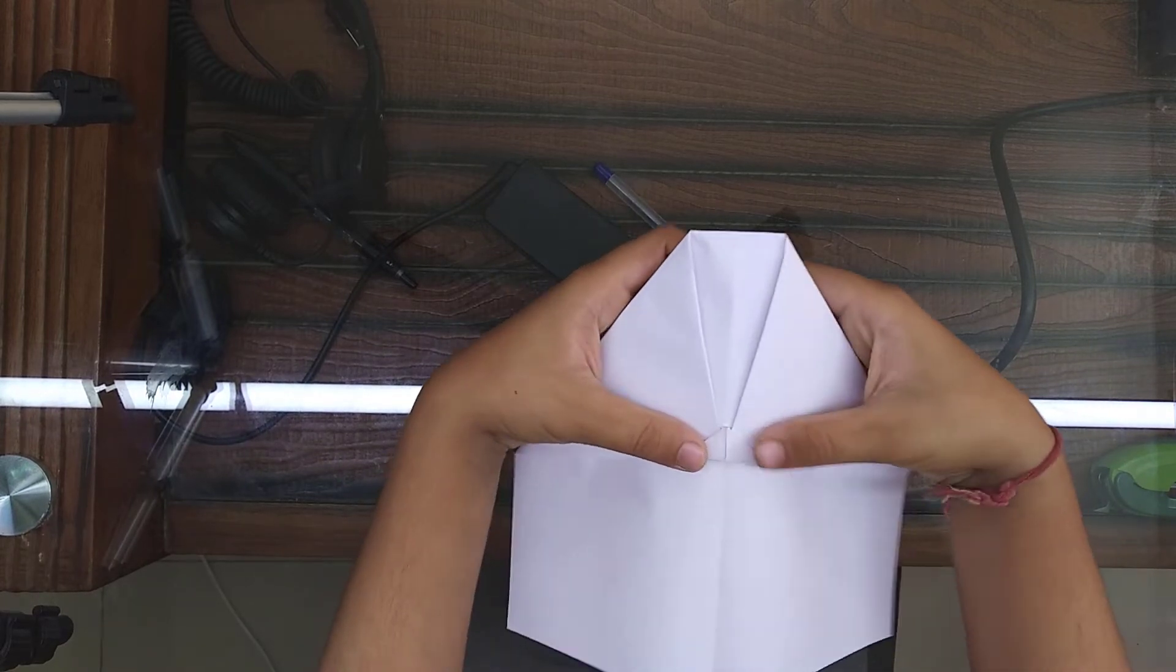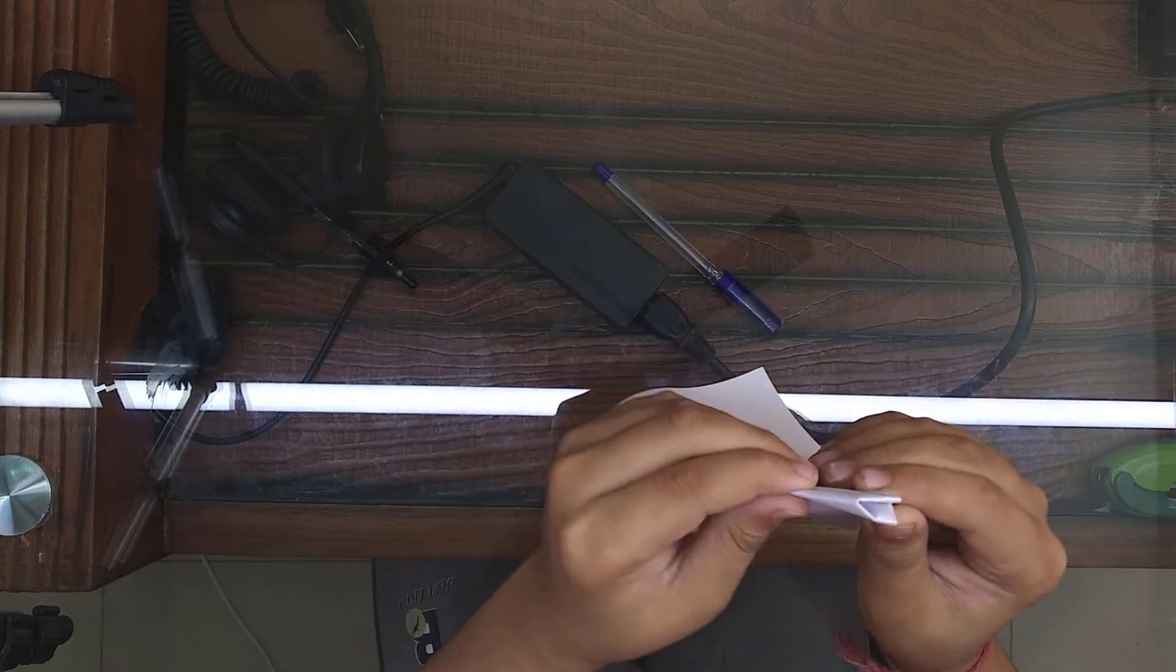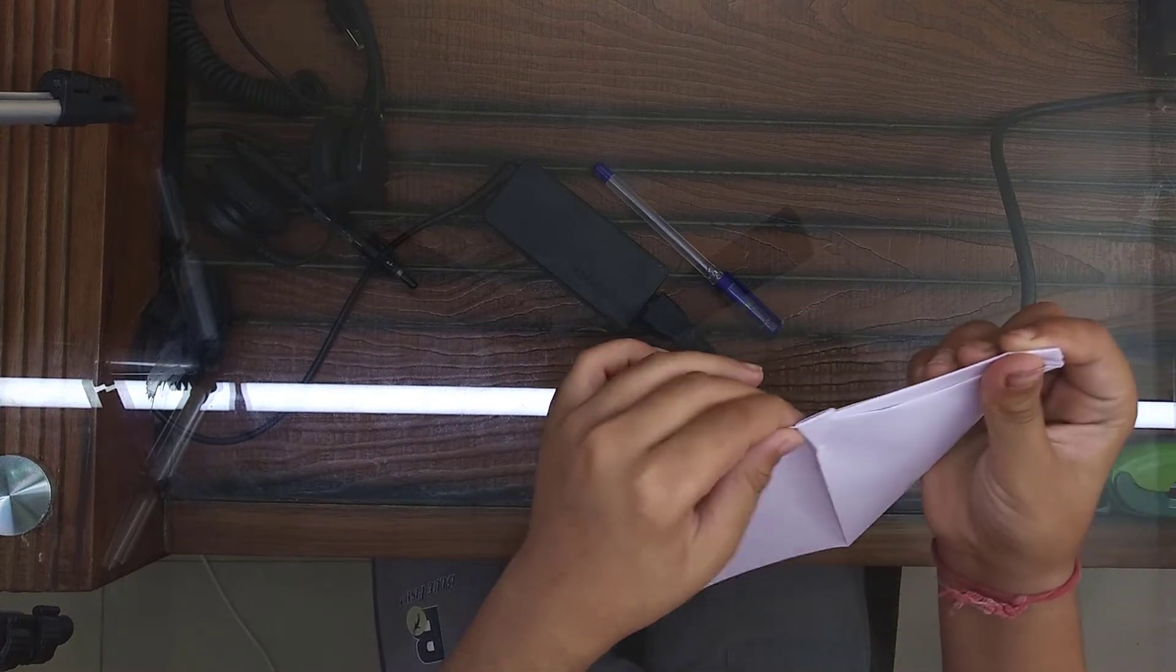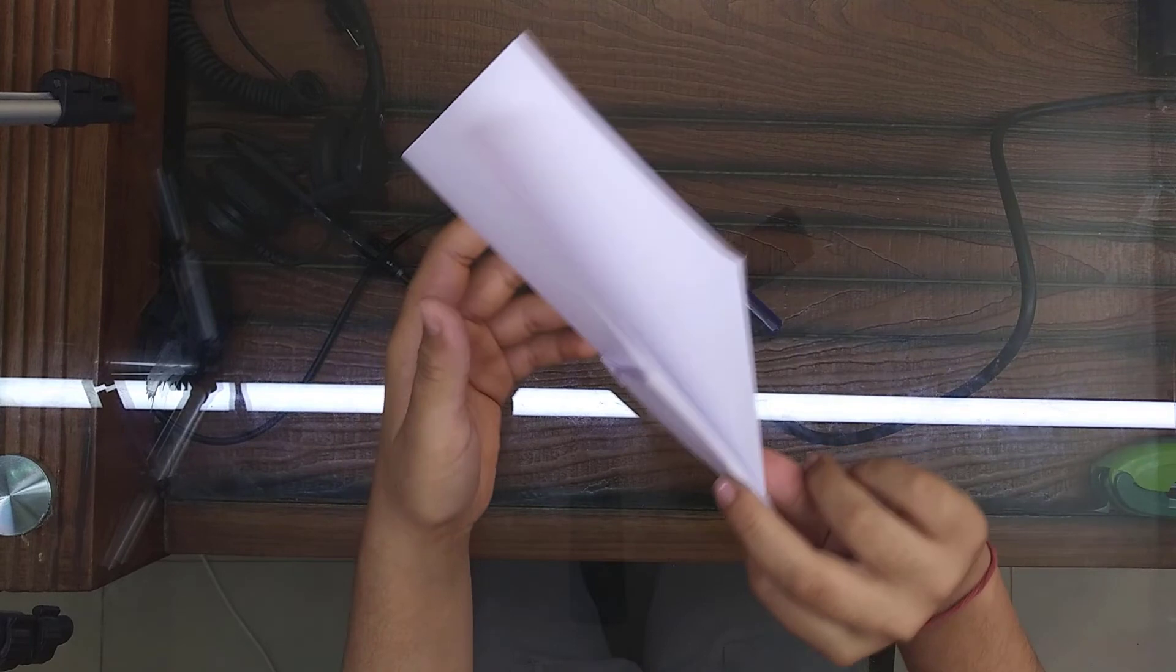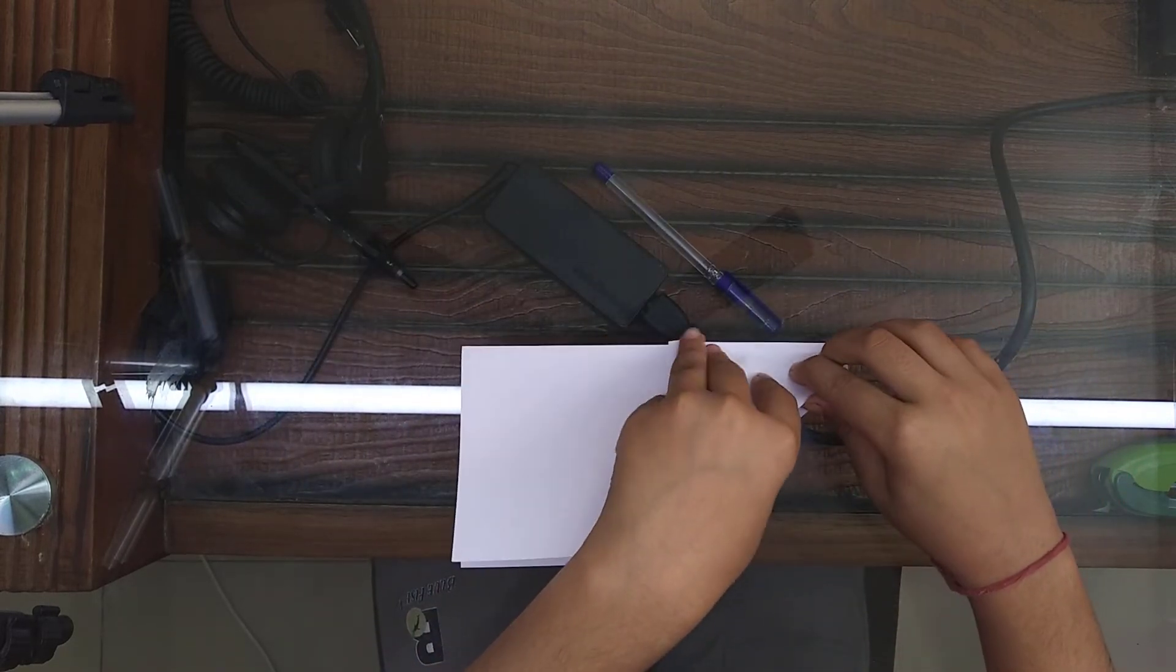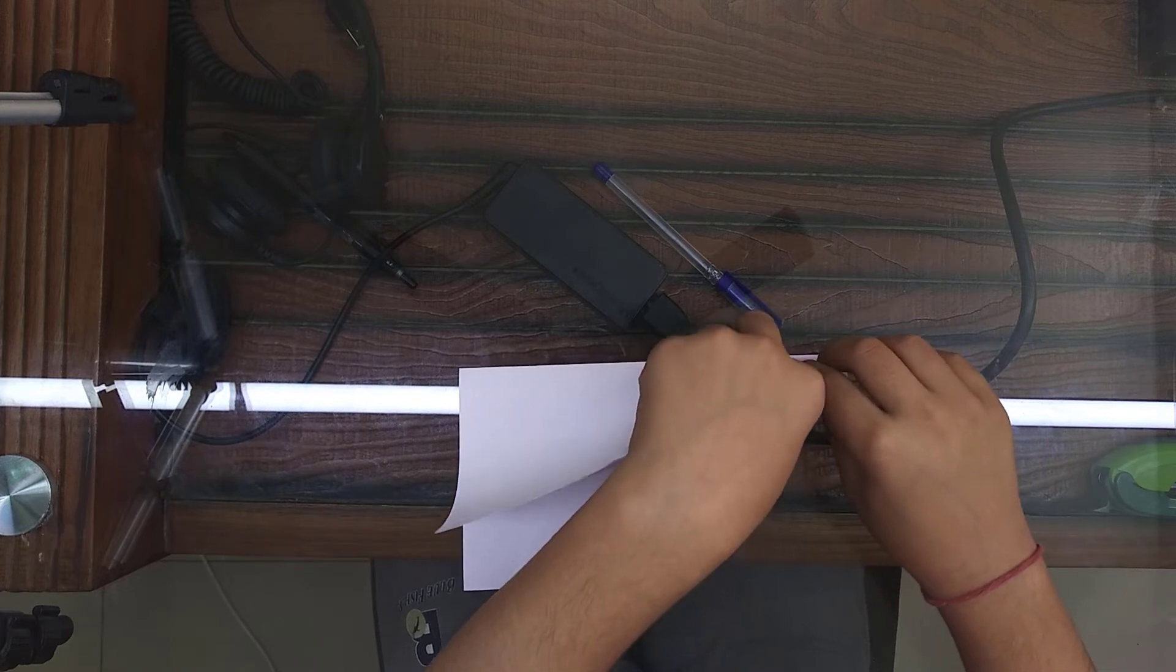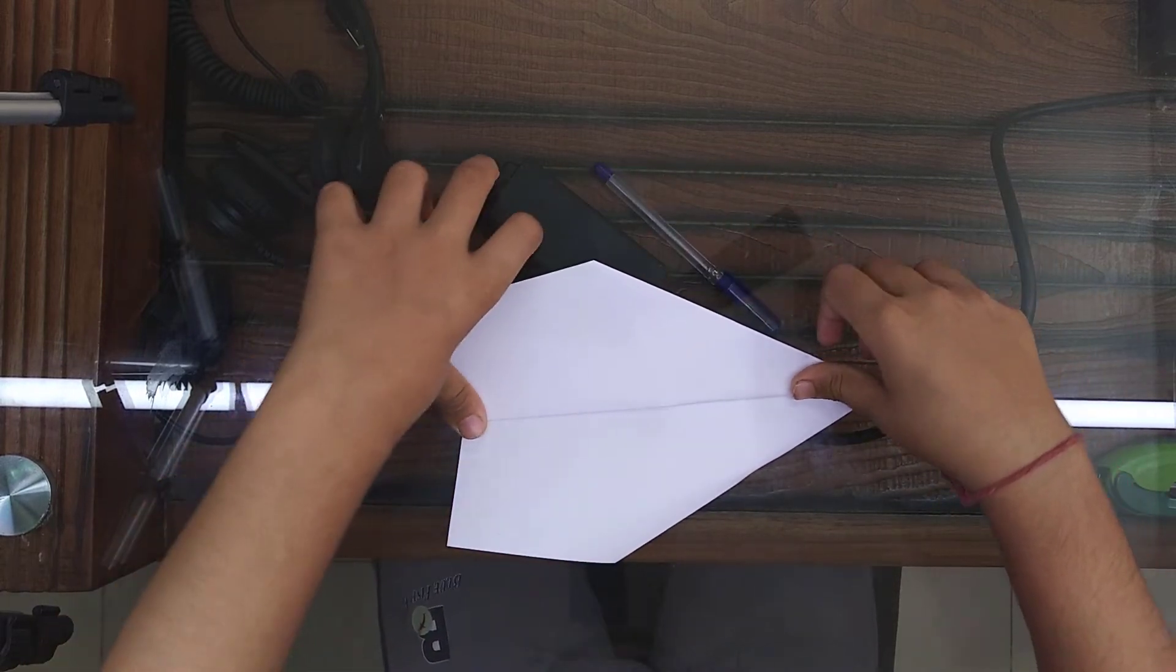Now we are going to take this paper, this is another tricky part, and then fold it like this. Now you should have a result of this. Now this is the most tricky part, take this and fold it here.